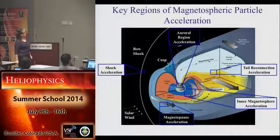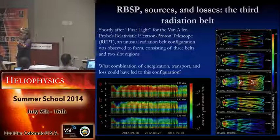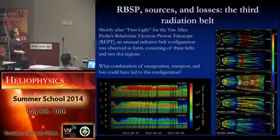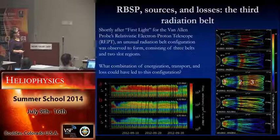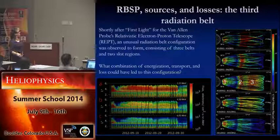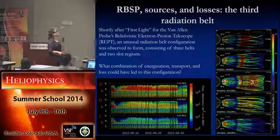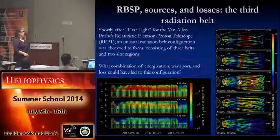I want to show you the RBSP — the most recent Van Allen Probes spacecraft data. The RETT instrument was built in those labs you visited at LASP and put on these two spacecraft. Here you see their orbits in this coordinate system: distance from the planet and vertical distance. You can see two radiation belts. As a function of time for different energy ranges, there was a lot of excitement back two Septembers ago — there were three radiation belts, and you can then think about what combinations of energization, transport, and loss could have led to this configuration.